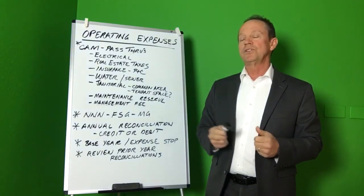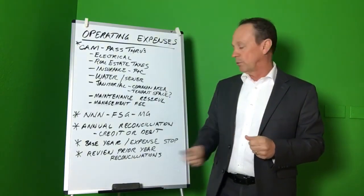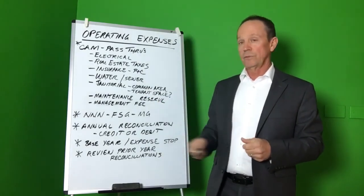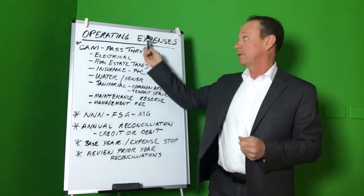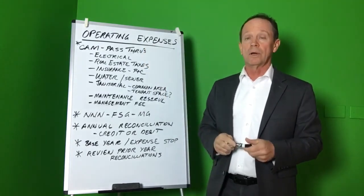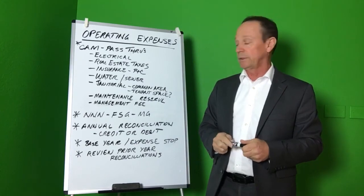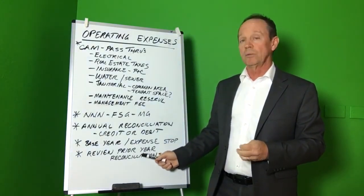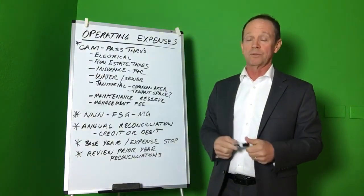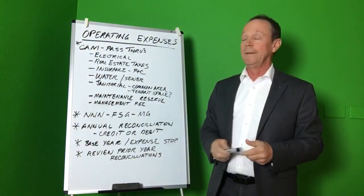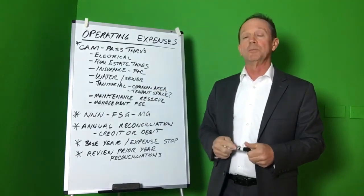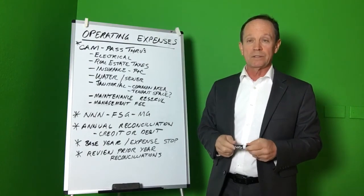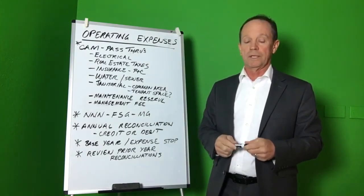I would suggest, if you're a tenant, to review any prior year's reconciliation when you're going through this. Make sure the landlord is doing it correctly to begin with so you don't have any surprises in subsequent years of the lease due to possible mismanagement in prior years. Get a copy of that reconciliation and maybe even attach it as an exhibit to the lease so there are no misunderstandings.